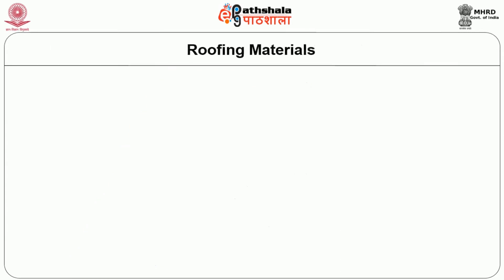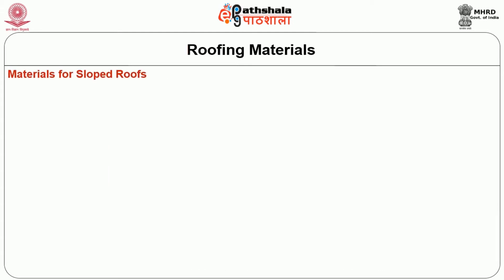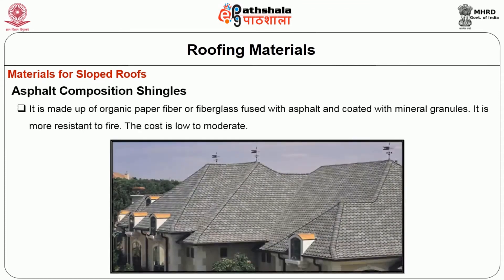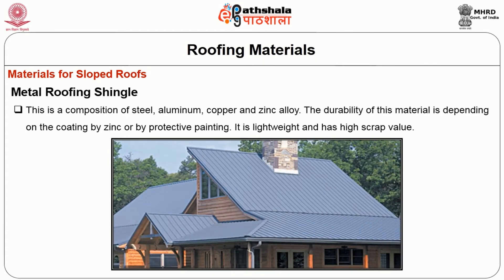Roof materials are either natural or man-made. Natural materials include slate and wood; man-made materials include concrete, asphalt, sheet metal and plastic polymers. For sloped roofs: asphalt composition shingles are made up of organic paper fiber or fiberglass fused with asphalt and coated with mineral granules — they are highly resistant to fire and low to moderate in cost. Metal roofing shingles are a combination of steel, aluminum, copper and zinc alloy; their durability depends on coating with zinc or protective painting, and they are lightweight with high scrap value.